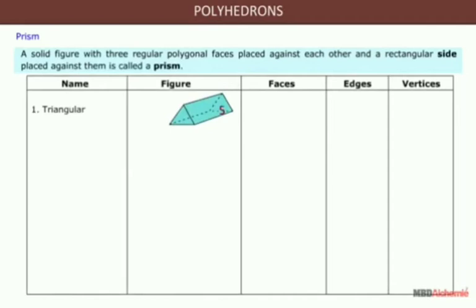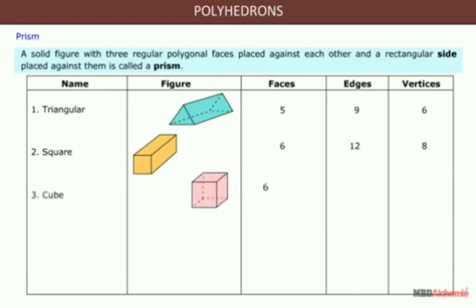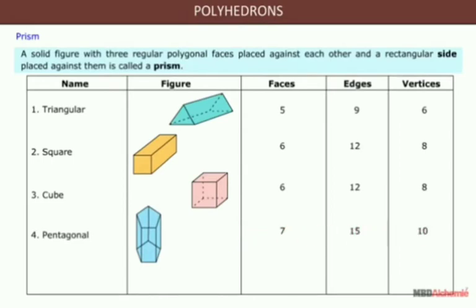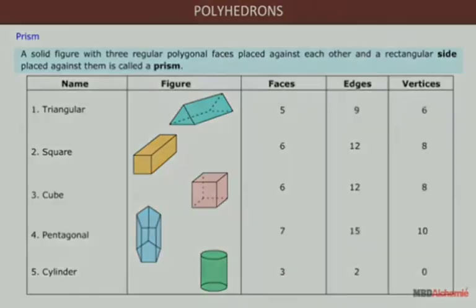A triangular prism has 5 faces, 9 edges, and 6 vertices. A square prism has 6 faces, 12 edges, and 8 vertices. A cube has 6 faces, 12 edges, and 8 vertices. A pentagonal prism has 7 faces, 15 edges, and 10 vertices. A cylinder has 3 faces, 2 edges, and 0 vertices.